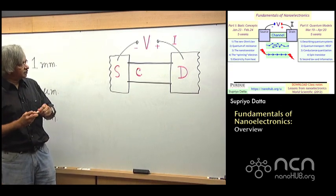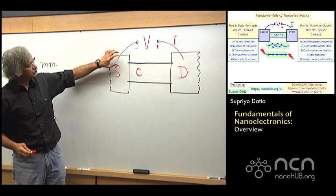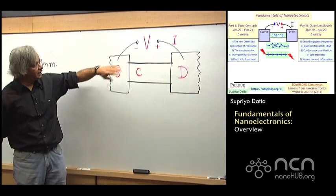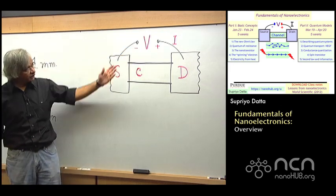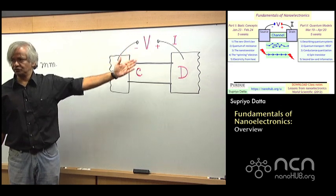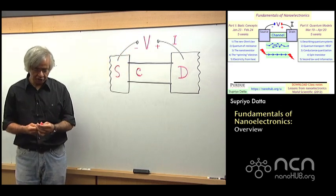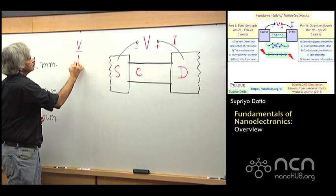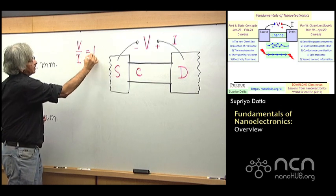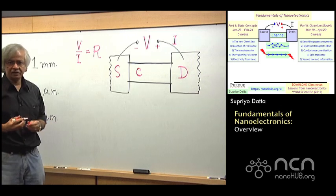These are large contacts across which you can connect a battery. That's this voltage. When you put a voltage, a current flows. And the ratio of voltage to current, that's called a resistance.